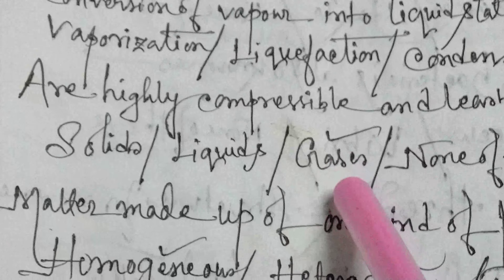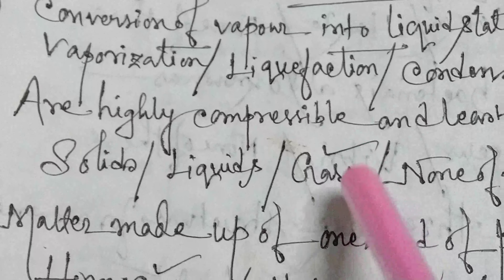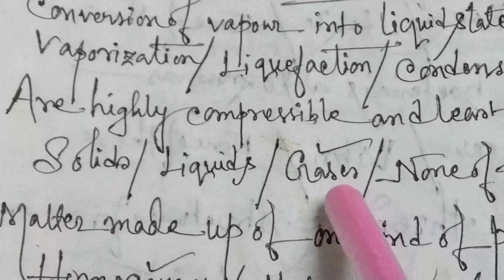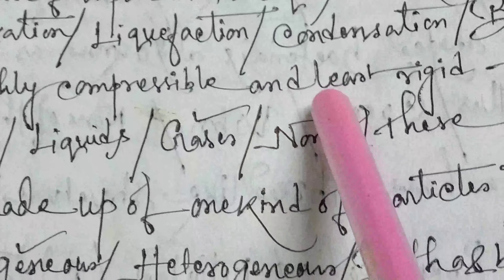Gases are highly compressible and least rigid. The gaseous state of any matter is basically highly compressible and least rigid.